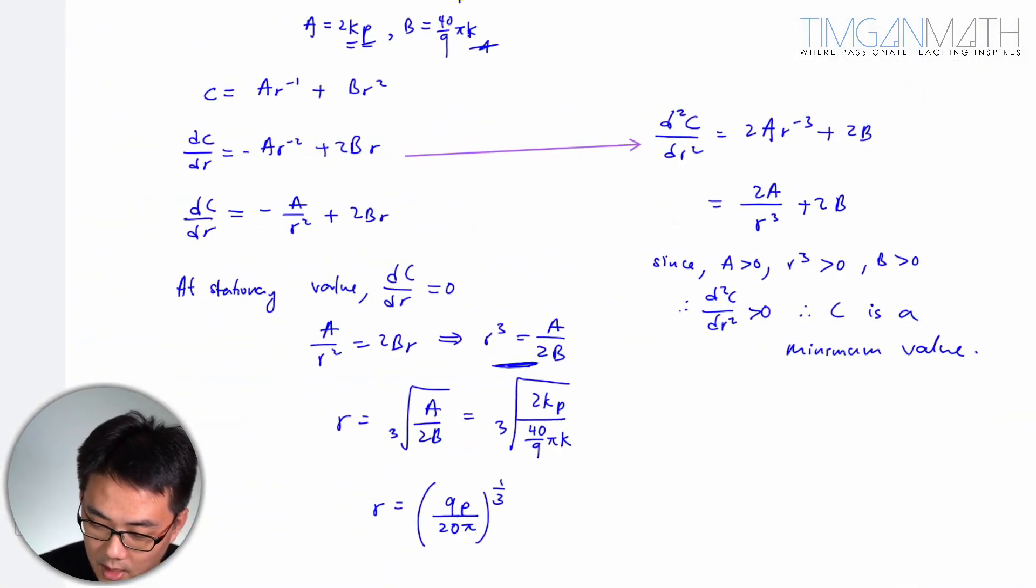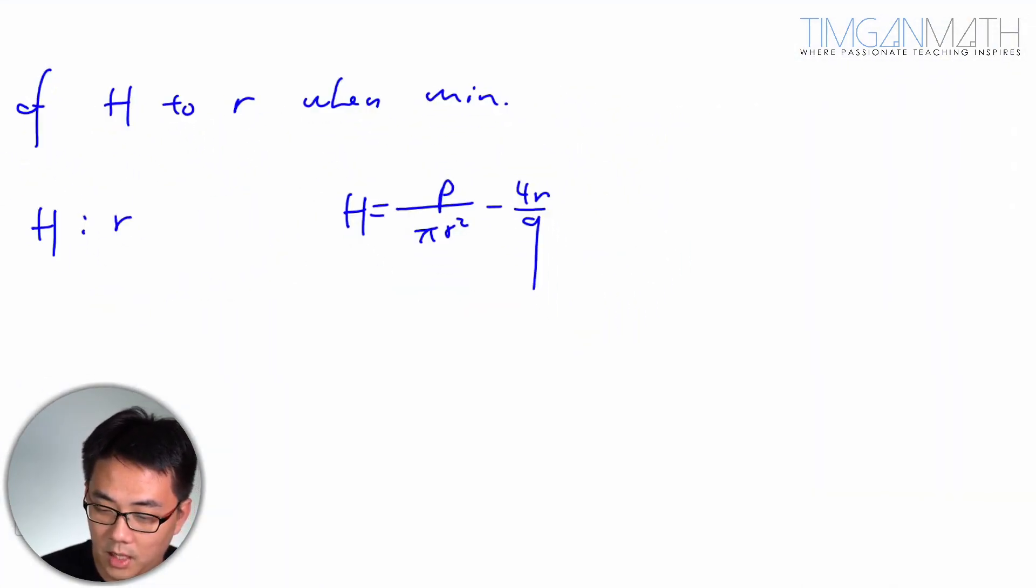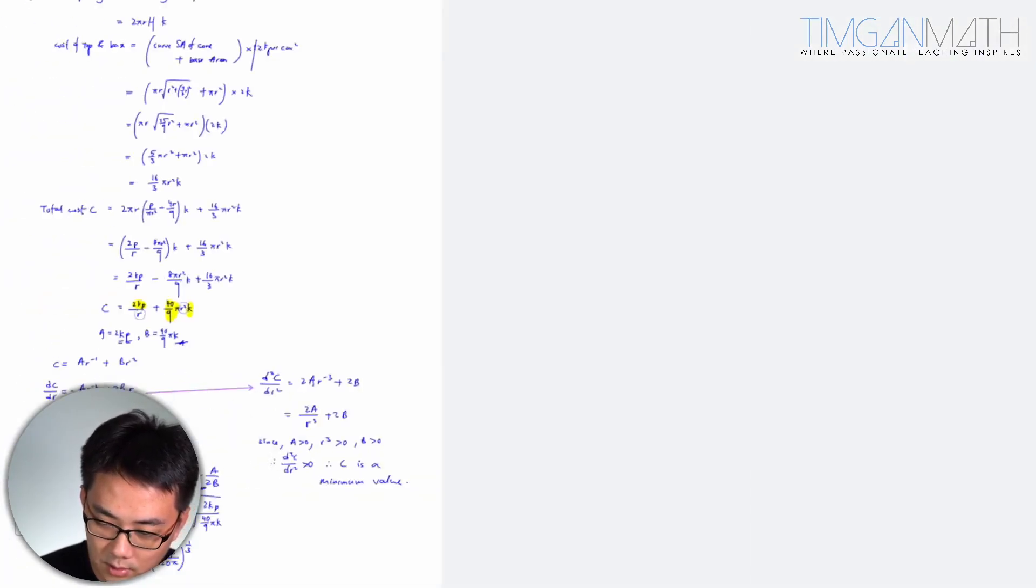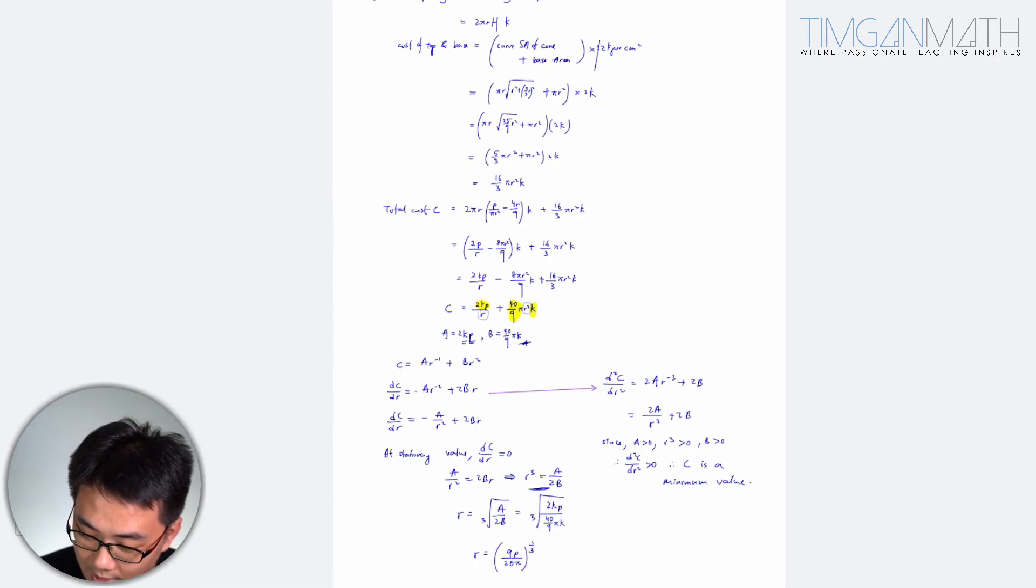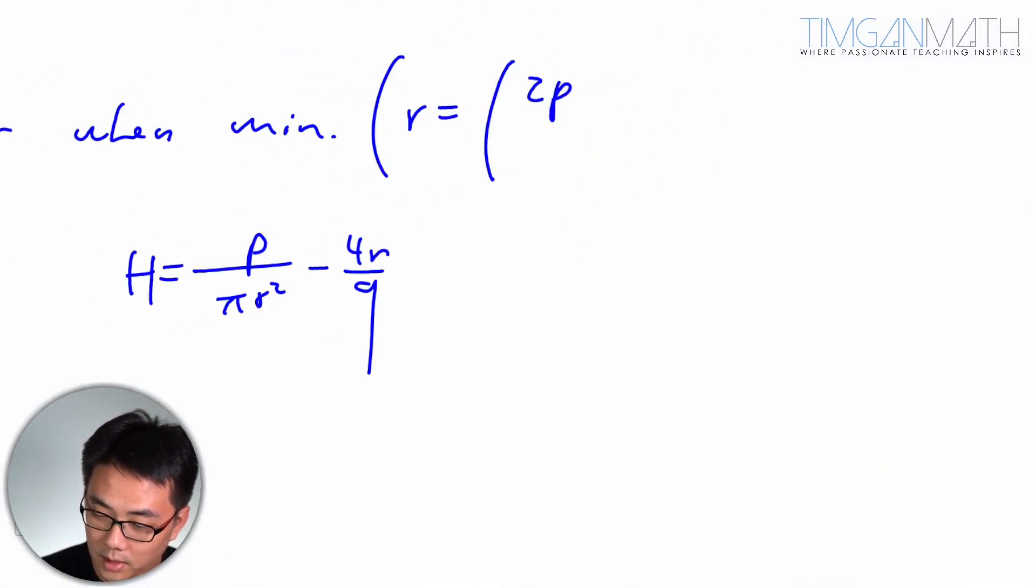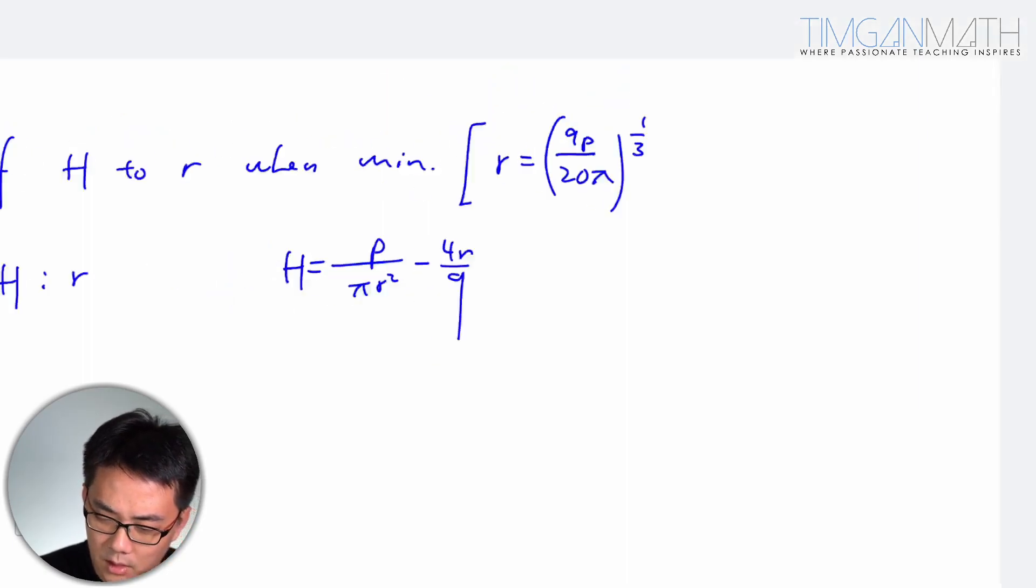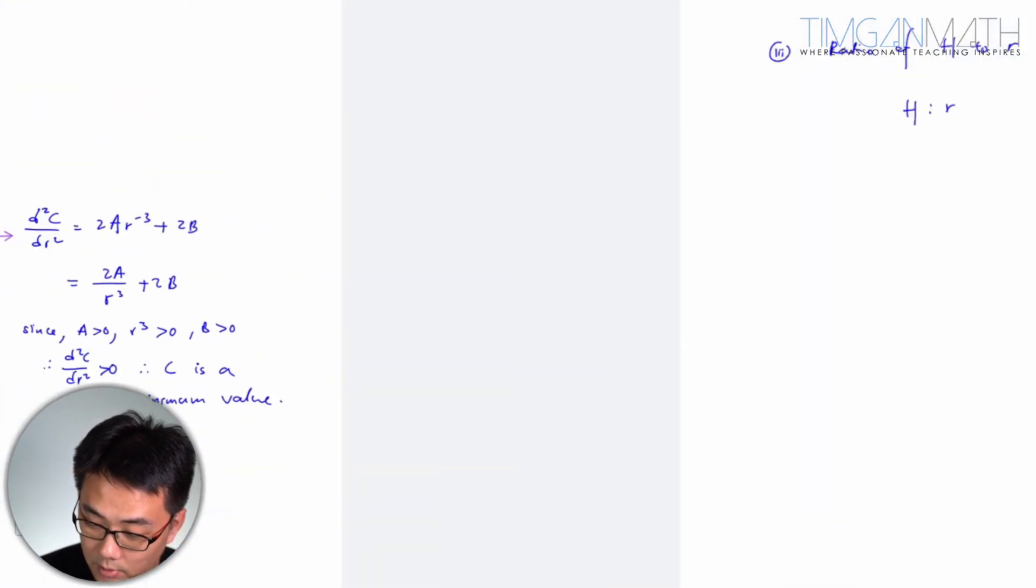Minimum is when R is 2P, so this is min when R equals to 2P. What did I get just now? 9P over 20 pi, so 9P. R equals to 9 over 20 P over pi to the one third. So this is 9 over 20. Alright, okay great.